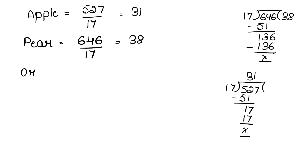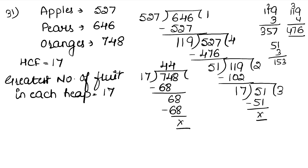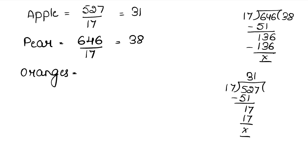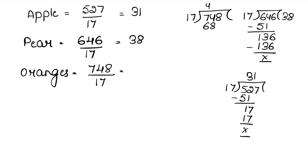Now oranges — if each heap has 17 oranges, and we had 748 oranges total. Divide 748 by 17. 17 times 4 is 68; subtract from 74, remainder 6; bring down 8. 17 times 4 is 68. So orange heaps = 44.